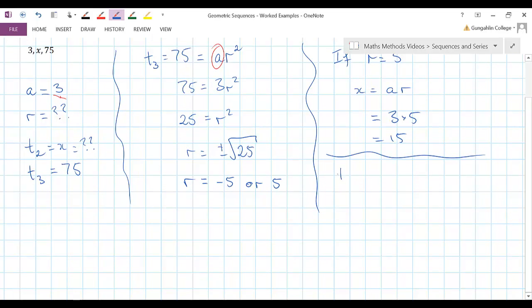If, on the other hand, the common ratio is negative 5, then we're going to have x equal to 3 times minus 5, and it's going to be minus 15.